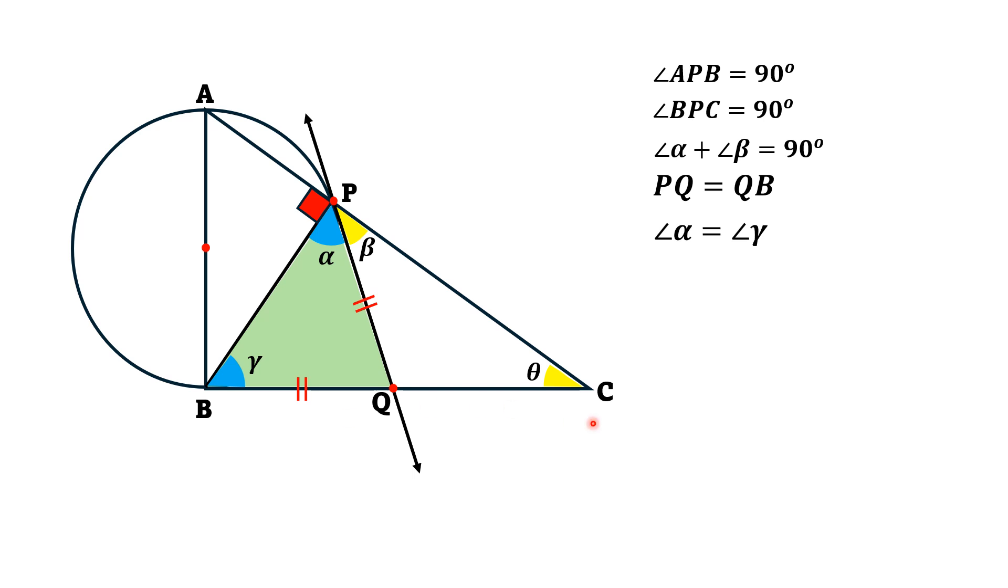Now, let's call the angle at point C theta and consider this larger triangle, BPC. From this triangle, since the angle at point P is 90 degrees, the sum of the other two angles must equal 90 degrees.